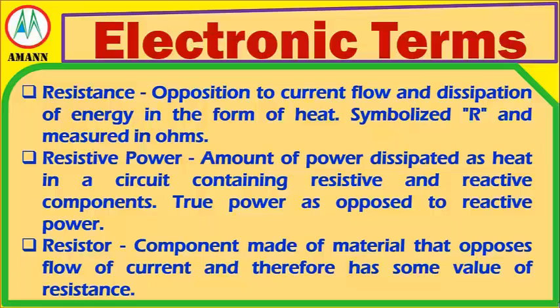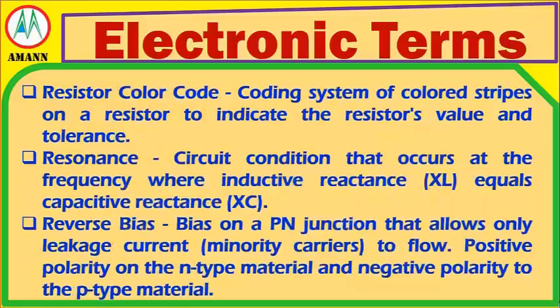Resistive Power: an amount of power dissipated as heat in a circuit containing resistive and reactive components; true power as opposed to reactive power. Resistor: a component made of material that opposes flow of current and therefore has some value of resistance. Resistor Color Code: a coding system of colored stripes on a resistor to indicate the resistor's value and tolerance. Resonance: a circuit condition that occurs at the frequency where inductive reactance equals capacitive reactance. Reverse Bias: a bias on a P-N junction that allows only leakage current to flow, with positive polarity on the N-type material and negative polarity on the P-type material.